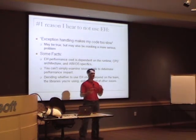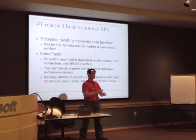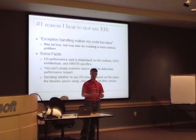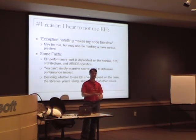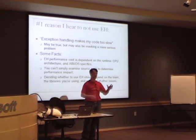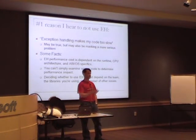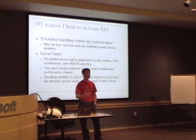EH performance — how fast it is to enter a try block, to construct an object that has exception handling side effects, to enter a catch, to throw and catch an exception — really depends on your C++ runtime, the CPU architecture you're running on, and the OS you're running on. Win32 and Win64 have completely different performance characteristics. So you really can't look at C++ source code and reason about performance if there's exception handling in it, unless you understand the environment in which that code will run.